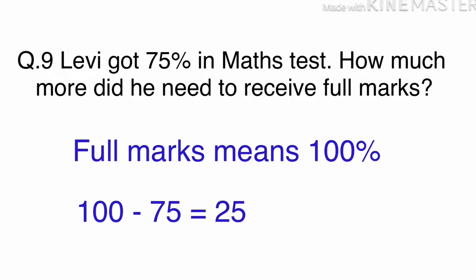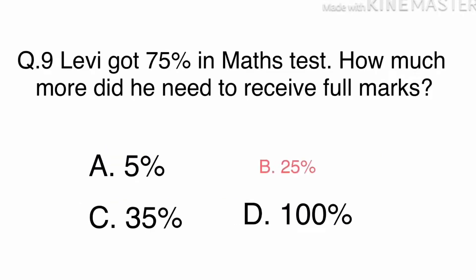Full marks means 100%. Simply take 75 away from 100 to get 25. The answer is B. 25%.